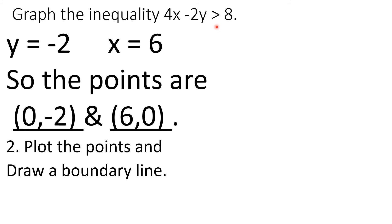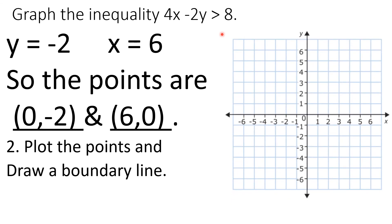Let's plot the points and draw a boundary line. Observe, it's greater than, there's no equal to, meaning broken line is our boundary line. So 0, negative 2 here, 6, 0 is a broken line. Graph it now.